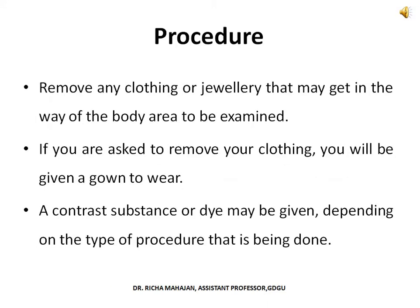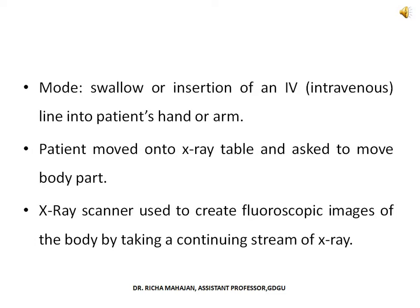The procedure of fluoroscopy involves the individual being asked to remove any clothing or jewellery that may get in the way of the body area to be examined. A gown will be given if clothing needs to be removed. Then a contrast substance or dye can be given depending on the type of procedure being done — it can be swallowed or given via an IV line into the patient's hand or arm. The patient is then moved onto an x-ray table.